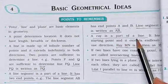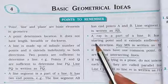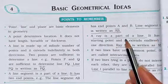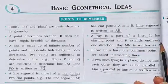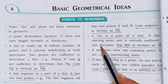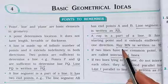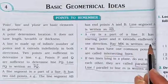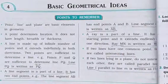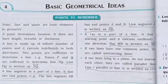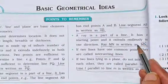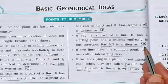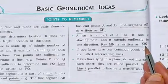A ray is a part of a line. It has a starting point and it extends endlessly in one direction. Ray MN is written with a single-headed arrow over MN, indicating direction from M to N.